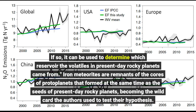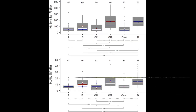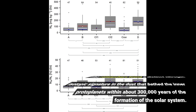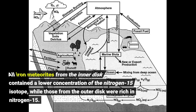Iron meteorites are remnants of the cores of protoplanets that formed at the same time as the seeds of present-day rocky planets, becoming the wild card the authors used to test their hypothesis. The researchers found a distinct nitrogen isotopic signature in the dust that bathed the inner protoplanets within about 300,000 years of the formation of the solar system. All iron meteorites from the inner disk contained a lower concentration of the nitrogen-15 isotope, while those from the outer disk were rich in nitrogen-15.